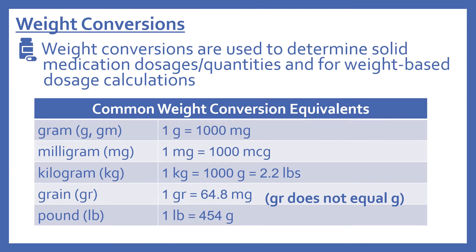Now we'll look at the weight conversions. Weight conversions are used to determine solid medication dosages and quantities and for weight-based dosage calculations. These are the common weight conversion equivalents that should be committed to memory: one gram equals 1,000 milligrams; one milligram equals 1,000 micrograms; and one kilogram equals 1,000 grams.